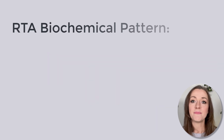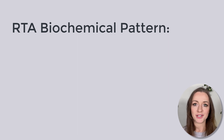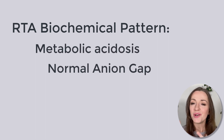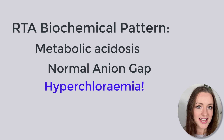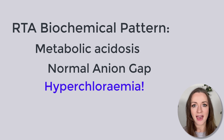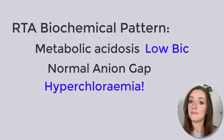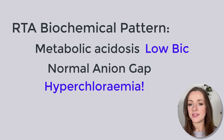Another key concept is the biochemical pattern itself. RTA is a biochemical pattern of metabolic acidosis with a normal anion gap. One more thing to draw your attention to is hyperchloremia — hyperchloremic acidosis is the same thing as a metabolic acidosis with a normal anion gap. So if you see the combination of a low bicarbonate and a high chloride, you have to think: am I dealing with RTA? It's up there in the differential.